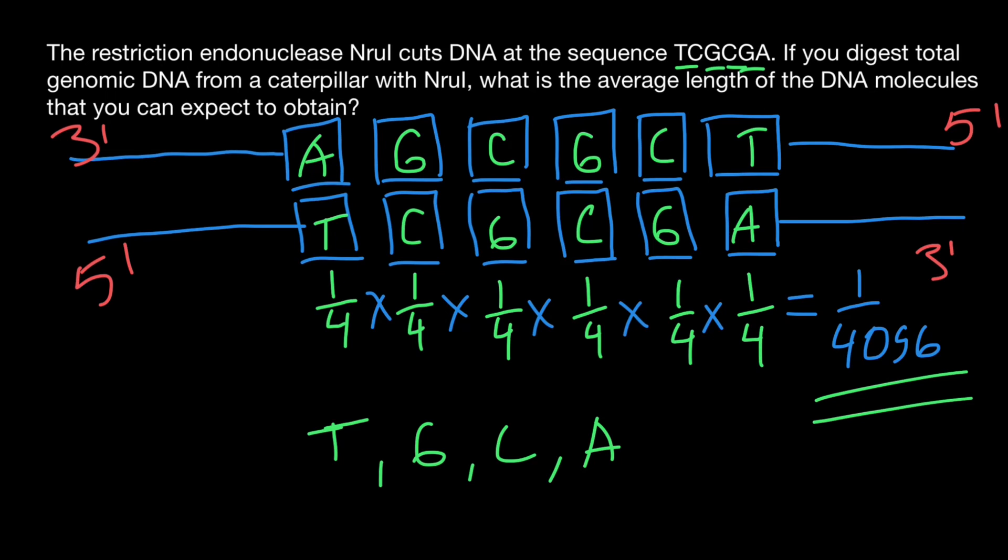So we don't have to combine these two probabilities. And this is going to be our answer. So this restriction enzyme would cut double-stranded DNA every 4096 bases. But this is a rough estimation. This is not an exact number. This is just average. And we will get average fragment that consists of 4096 bases if the sequence is palindromic.